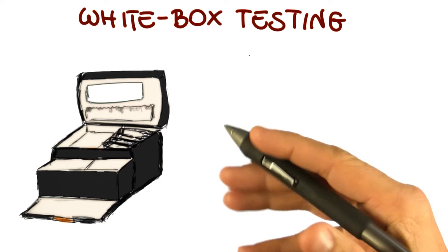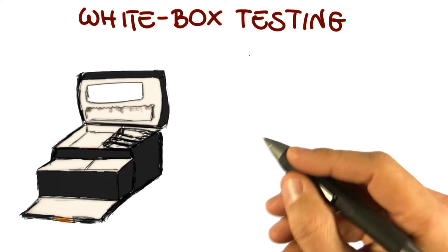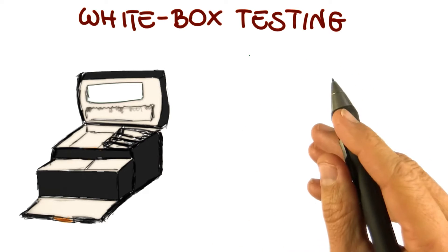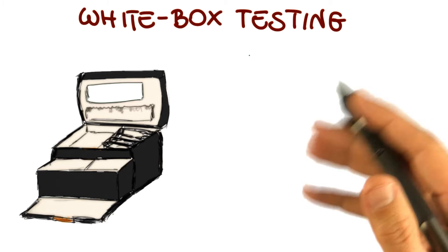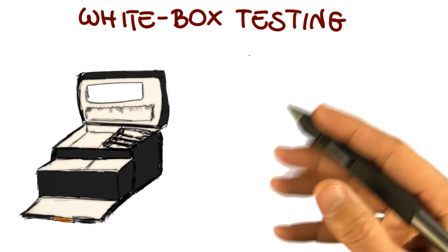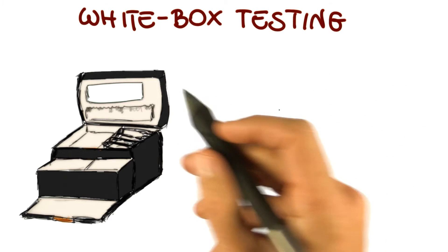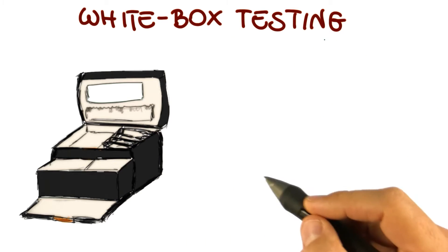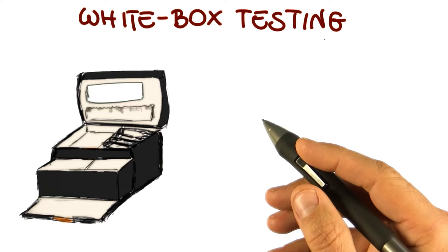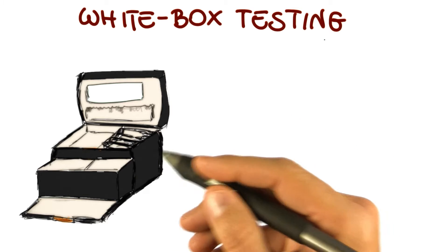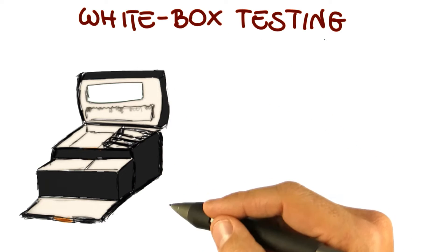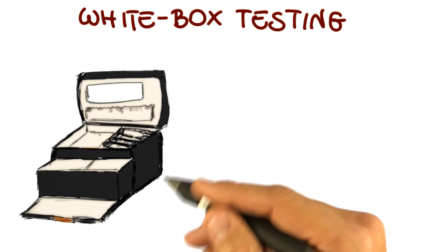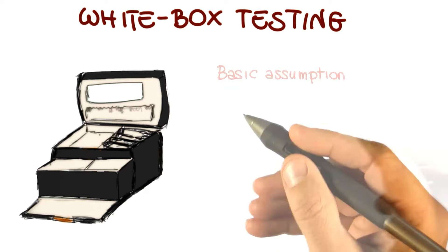In the last lesson, we talked about black box testing, or functional testing, which is the kind of testing that you perform when you just look at the description of the software. Today, we're going to cover white box testing, which is the kind of testing that we perform when we open up the box, when we look inside the program, and we actually test it based on its code.